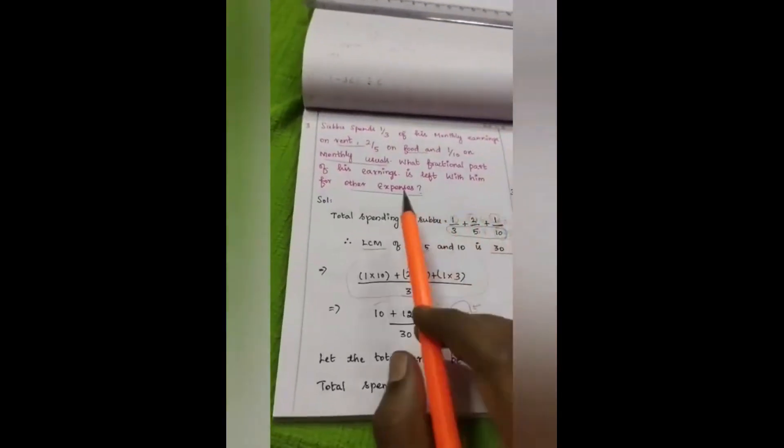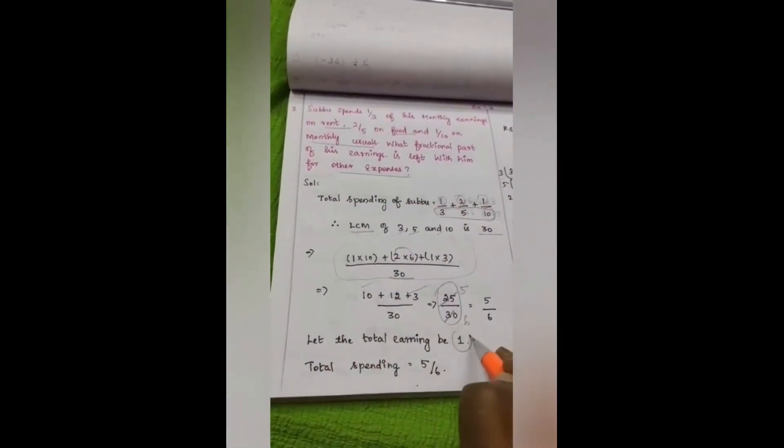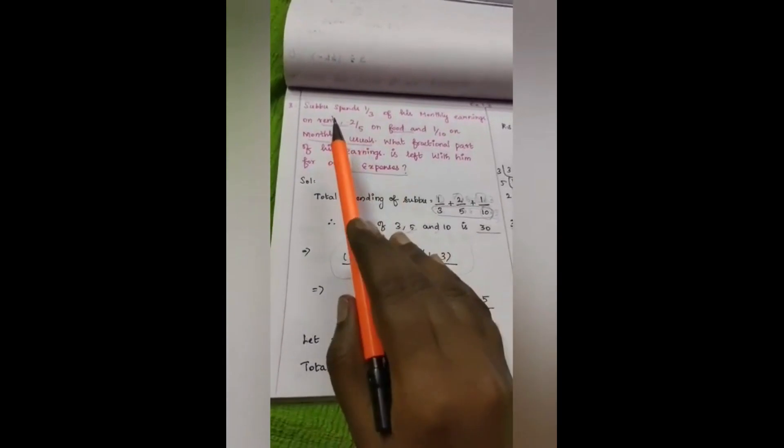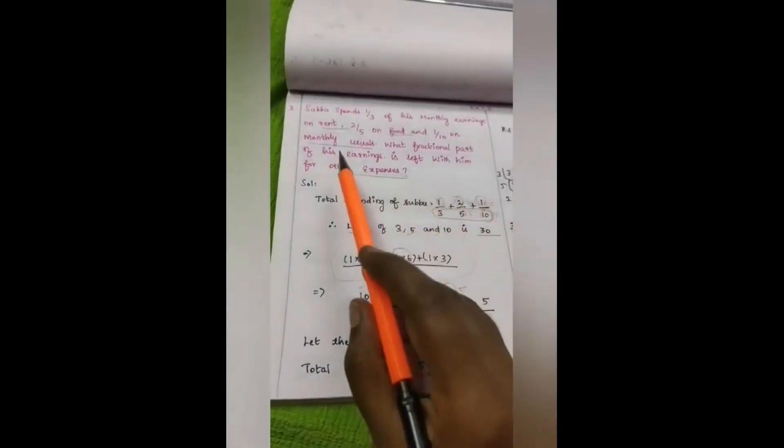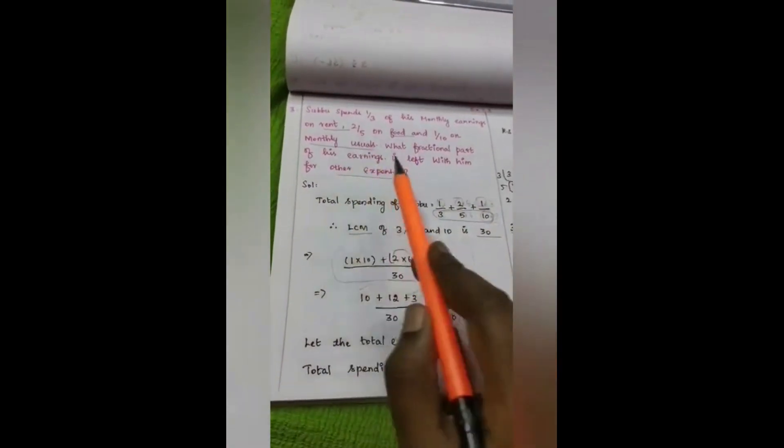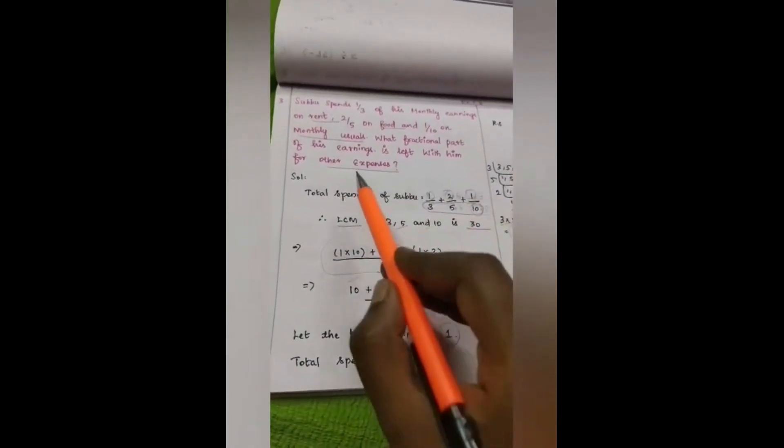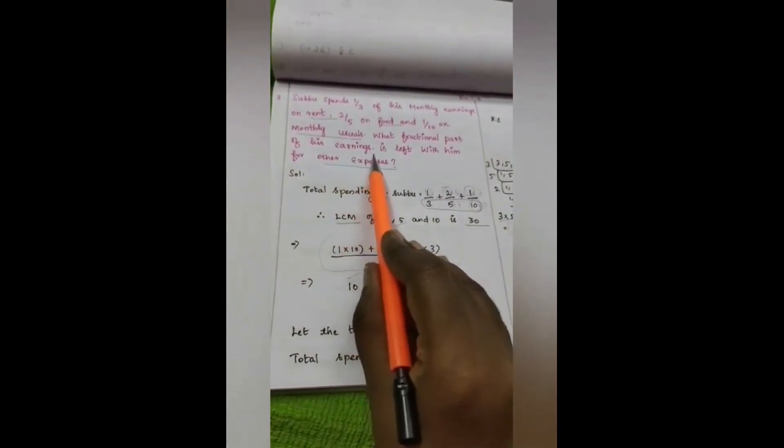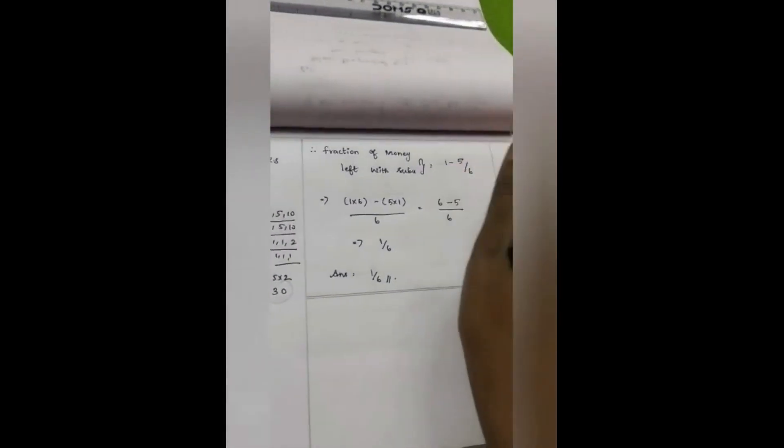What they tell us to find? It is for the total earning. The whole part is considered as 1. See, out of the total part, he has spent on rent, food and monthly usuals for 5 by 6 percentage. Out of 6 parts, he has spent 5 parts. What they tell us to find? We need to find Subbu's other expenses, how much money he had left with him.